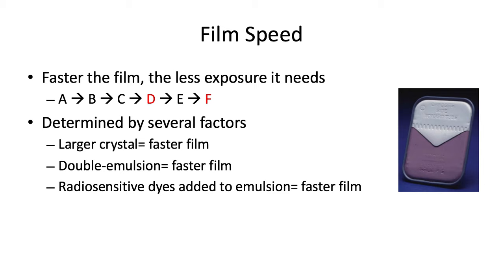Now let's talk about film speed. The basic rule is that the faster the film, the less exposure it needs, which is beneficial because it limits radiation dose to the patient. A is the slowest film, requiring the longest exposure time, going all the way up to F, the fastest, requiring the shortest exposure time. You do get some loss of image clarity and resolution as you get to a faster film speed — this correlates to how radiation dose and image quality are often inversely related.